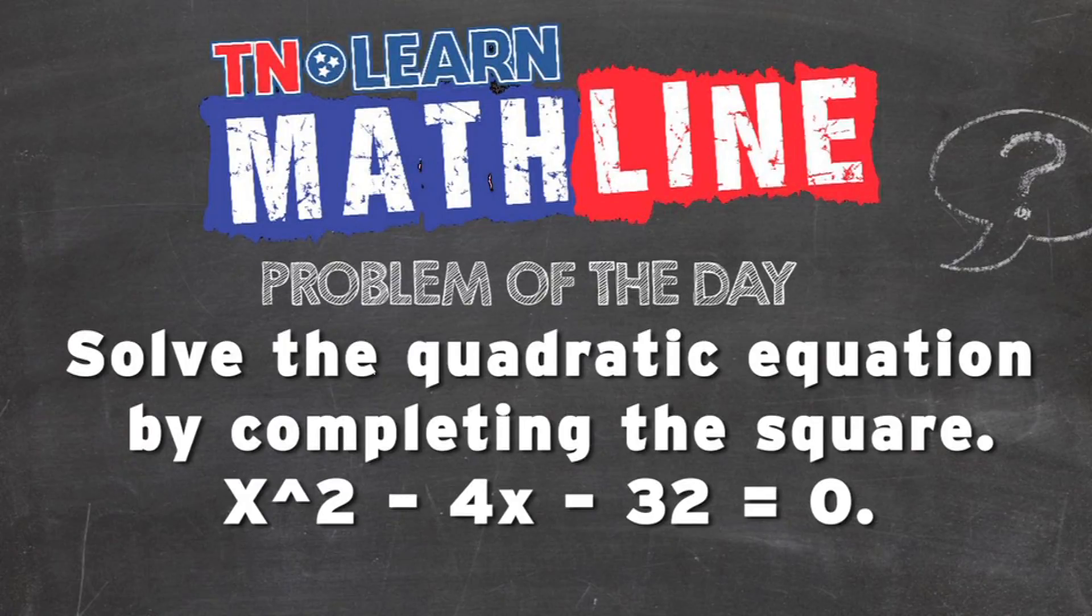Solve the quadratic equation by completing the square: x squared minus 4x minus 32 equals 0.